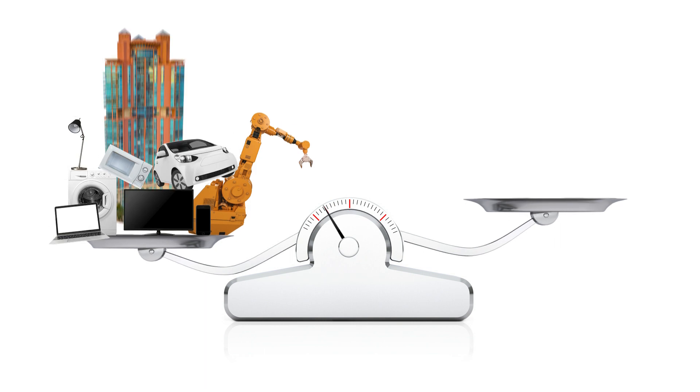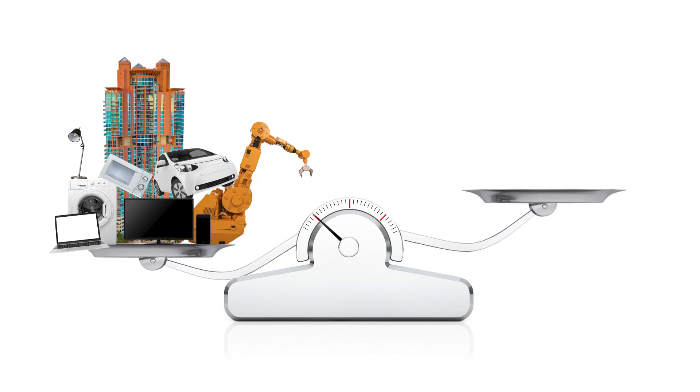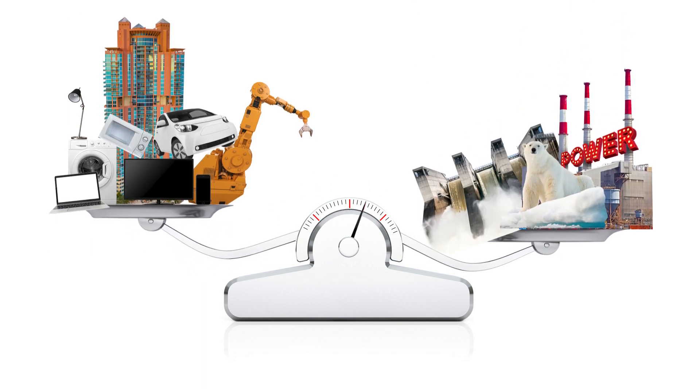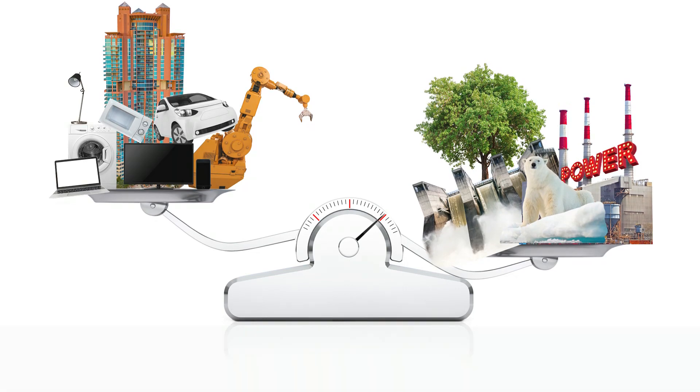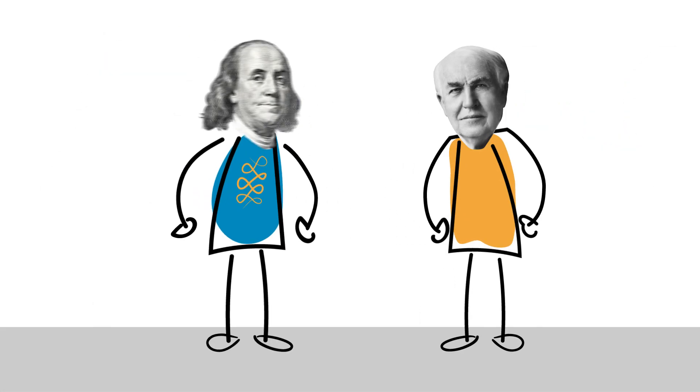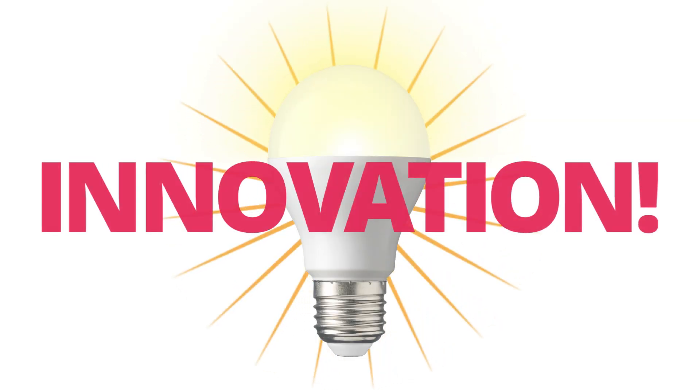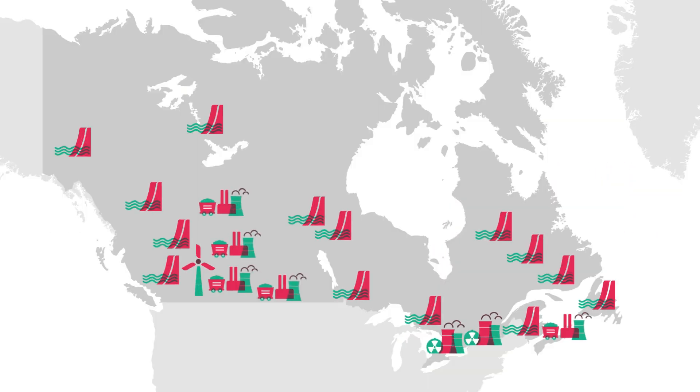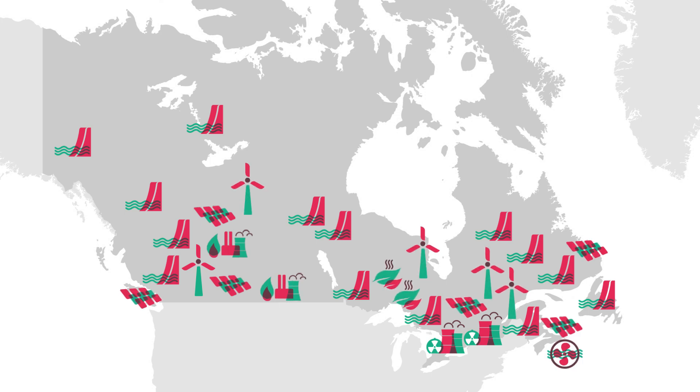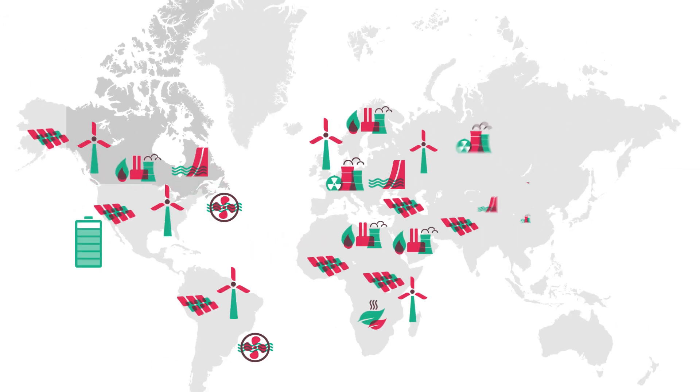So, how do we meet the growing demand for electricity while finding ways to reduce the environmental impact of energy production? The same way Thomas, Benjamin, and Nikola solved the problems of their day. Innovation is changing the way we produce and distribute electricity across Canada and in other parts of the world.